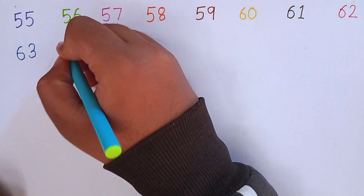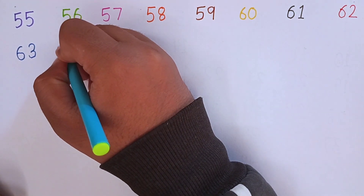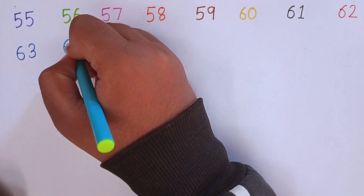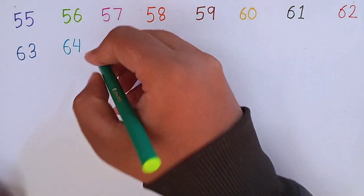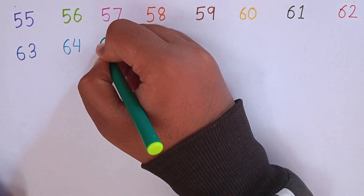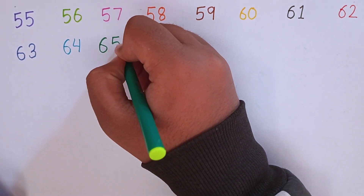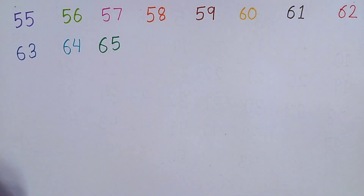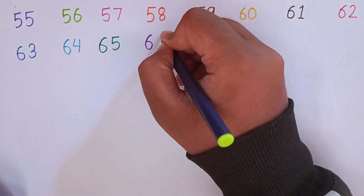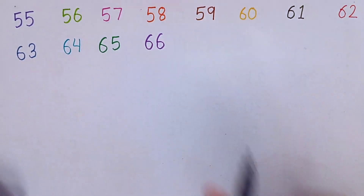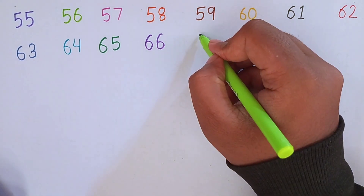After 62, now I will write 63. 6, 3 — 63. The next number will be 64. 64. After 64, the next number will be 65. 65. Again, repeat with me: 63, 64, 65, 66. This is 66. 6, 6 — 66.